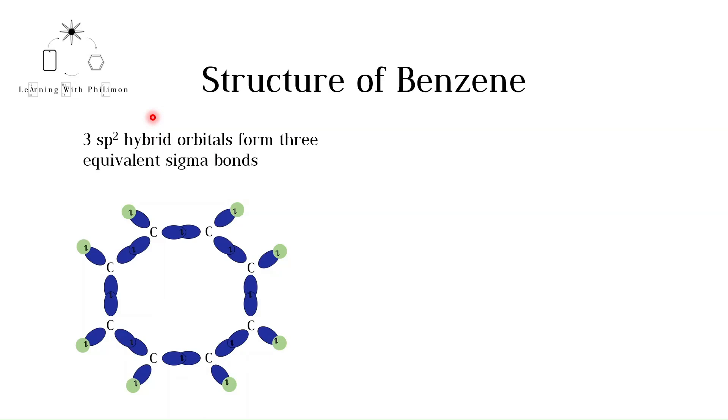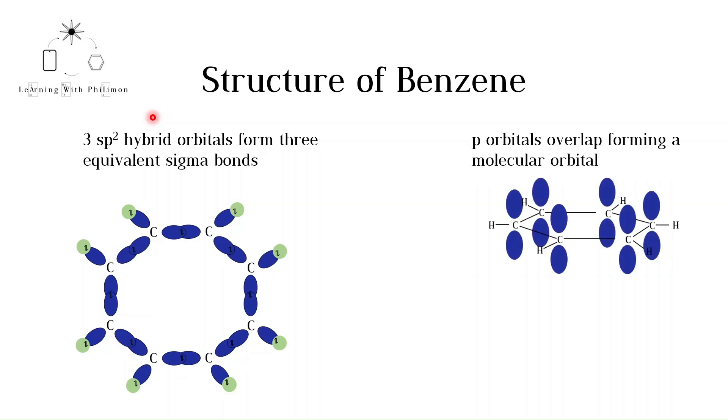Each carbon atom has 1 electron remaining in a p orbital. The p orbitals overlap, forming a molecular orbital with electron density above and below the ring. The 6 electrons originally occupying the atomic orbitals can now move across the whole ring in the molecular orbital. For more on this, please watch the molecular orbitals sigma and pi bonding video. The electrons are delocalized. This explains the relative stability of benzene we saw in hydrogenation compared to the structure proposed by Kekulé.